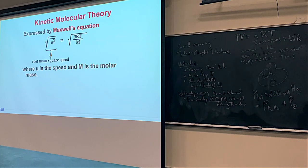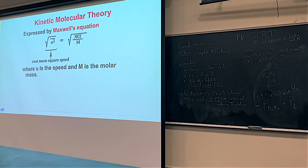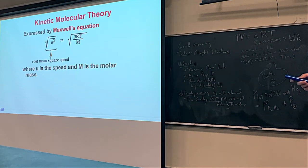Maxwell created an equation for the root mean square speed of gas molecules. The speed depends on temperature and molar mass. You don't need to use this equation in this class, but the key takeaways are: speed (u) increases as temperature goes up — both are in the numerator. And as molar mass increases (in the denominator), speed decreases. Temperature and speed are directly proportional; molar mass and speed are inversely proportional.